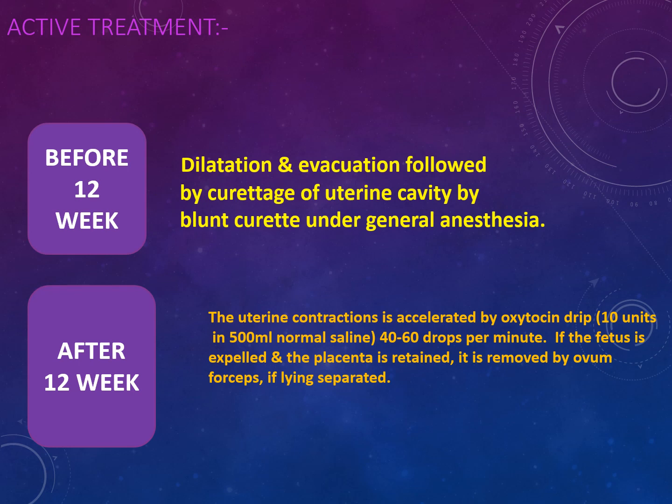In active treatment, inevitable abortion is managed based on gestational age: before 12 weeks and after 12 weeks. If the pregnancy is less than 12 weeks, the management protocol is to go for D&C — dilatation and evacuation followed by dilatation and curettage of the uterine cavity with a blunt curette, performed under general anesthesia. You use the blunt curette to scrape out the fetus from the mother's uterus.